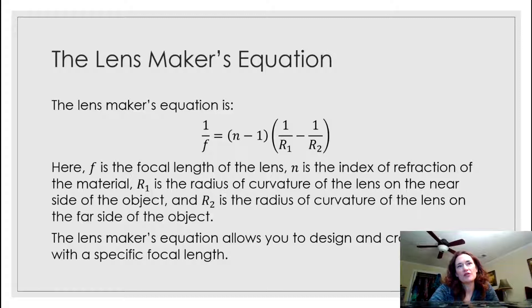The lens maker's equation says that one over the focal length of the lens is equal to n minus one, times the quantity one over R1 minus one over R2. Let me explain all the variables.